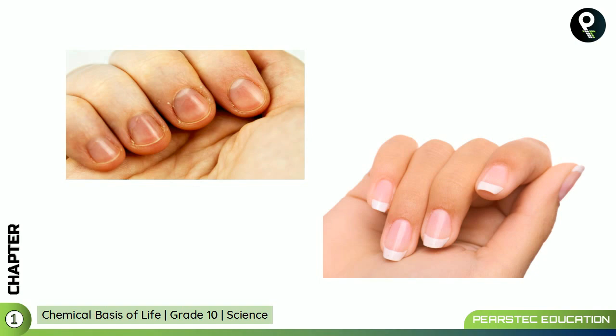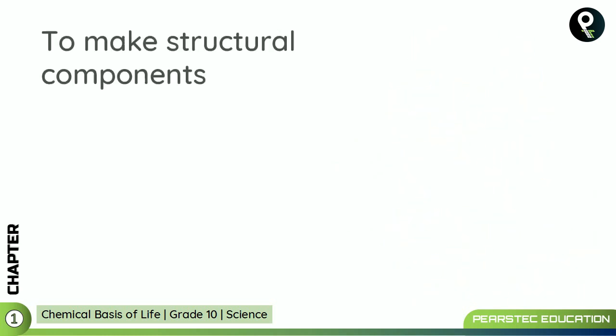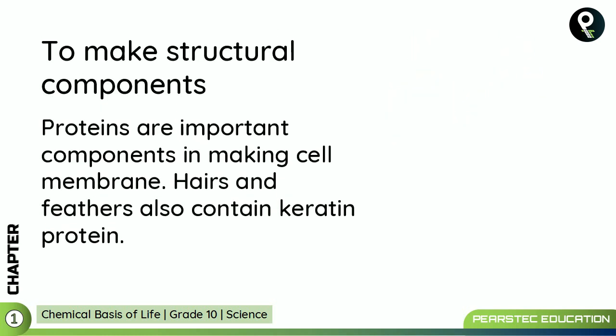Now look at these fingernails — you can already tell which one is healthier. The fingernail on the right side looks much healthier than the one on the left. Proteins are important structural components, making up cell membranes, hair, and feathers. These contain keratin protein. When hair and feathers don't have enough keratin protein, they look very pale and dull. You should know how to get keratin through food rather than through shampoos and artificial chemicals.